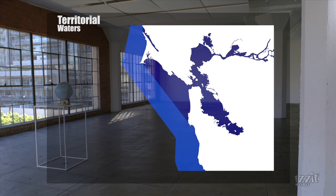Territorial waters extend to 12 nautical miles. Within this area, a country is free to set laws, regulate use, and use any resource. Foreign vessels are allowed to pass through these waters, including military ships, so long as they conduct themselves peacefully and keep moving.